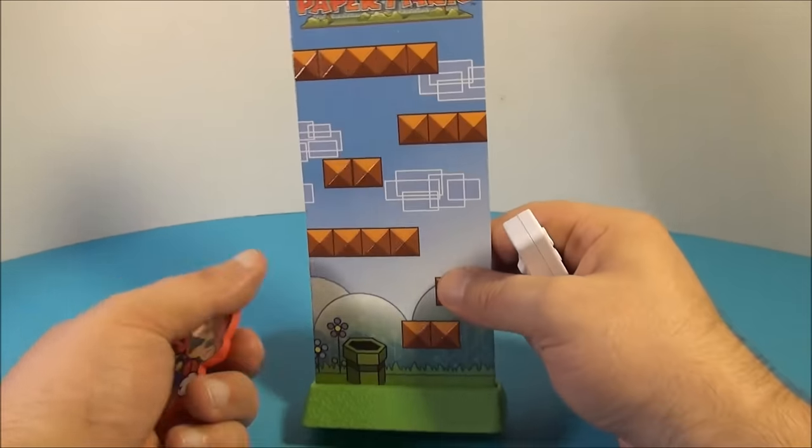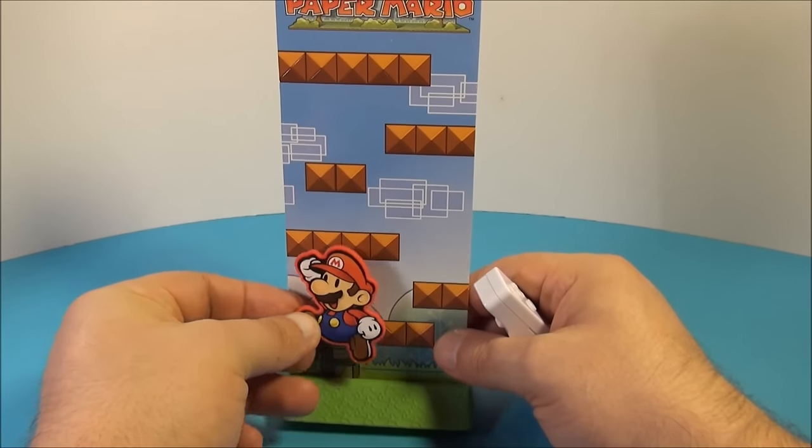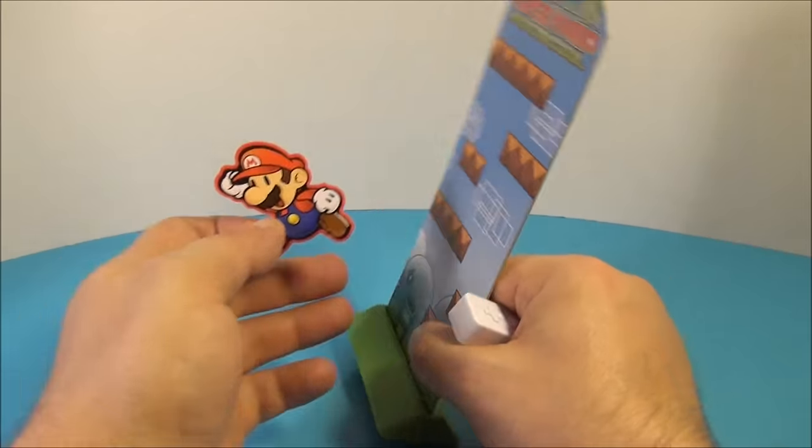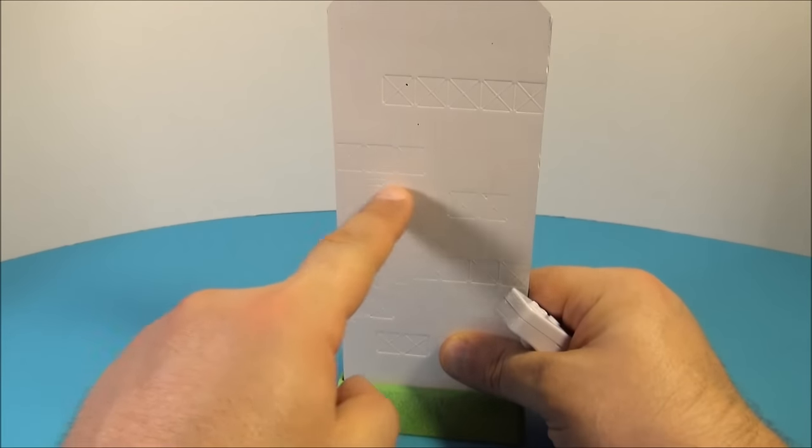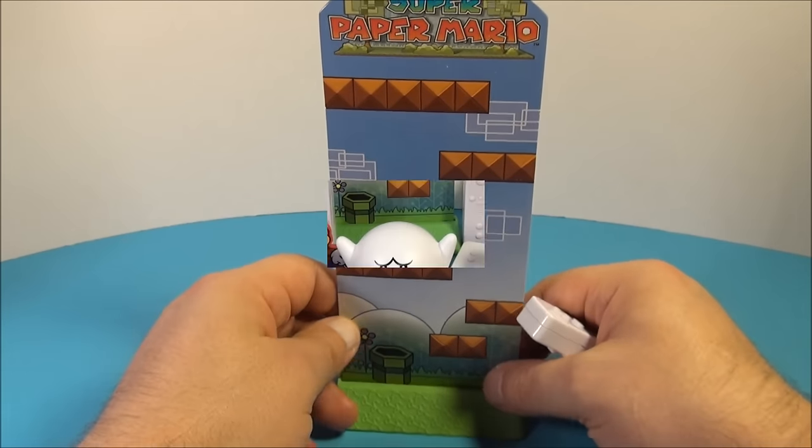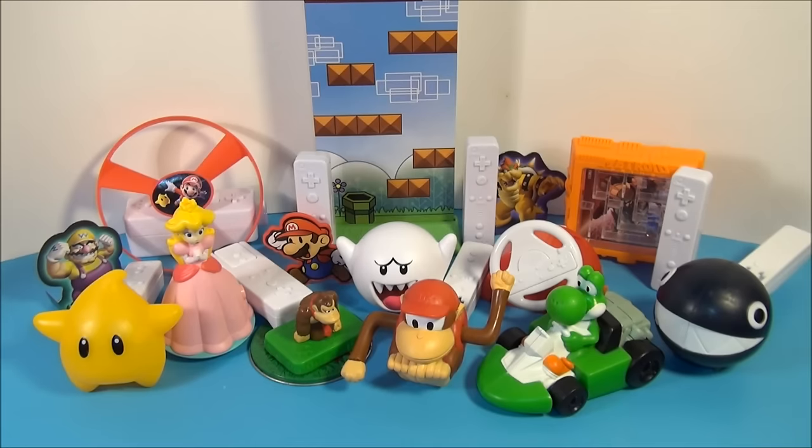But once you get them on there your goal is to try, I'm not going to be able to get it done, but what you want to do is you hold it from the back and you try to guide Mario all the way through without touching the blocks. And on the back here you can see they show you the blocks here as well. So that's the trick and it's pretty tough let me tell you, but a lot of fun.